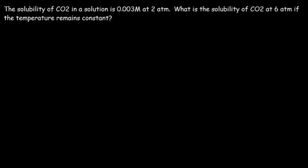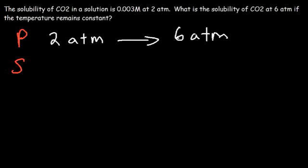What is the solubility of CO2 at 6 atm if the temperature remains constant? So what should we do to solve this problem? So let's look at pressure and solubility. The pressure changes from 2 atm to 6 atm. So the pressure increases, and it increases by a factor of three. Two times three is six. The solubility is currently 0.003.